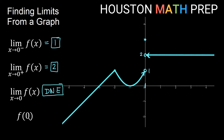And f of 0 asks: what is the y value when you are exactly at x equals 0? Both the y equals 1 approach and the y equals 2 approach are open holes, so we're not defined at either. But if you look above, there's a filled-in dot, so we are actually defined at a y value of 3 for the function at x equals 0. So f(0) equals 3.